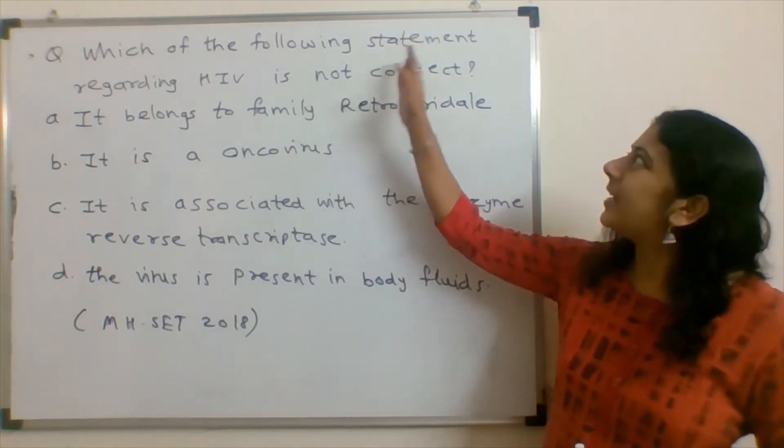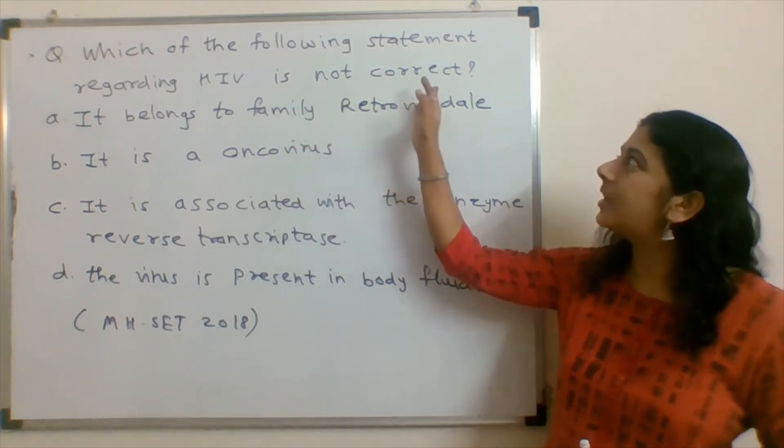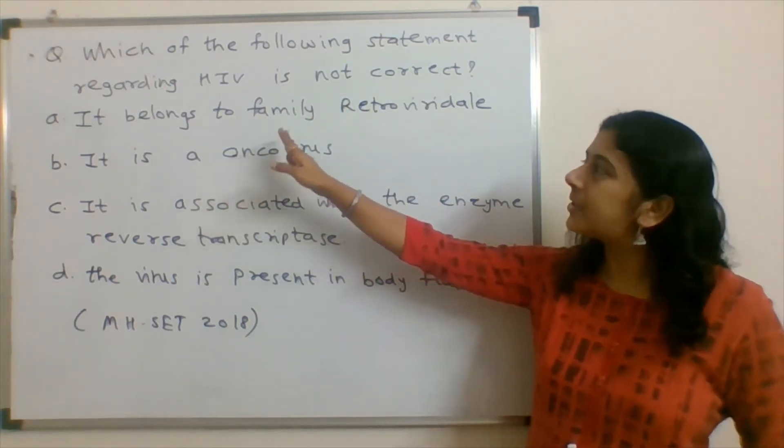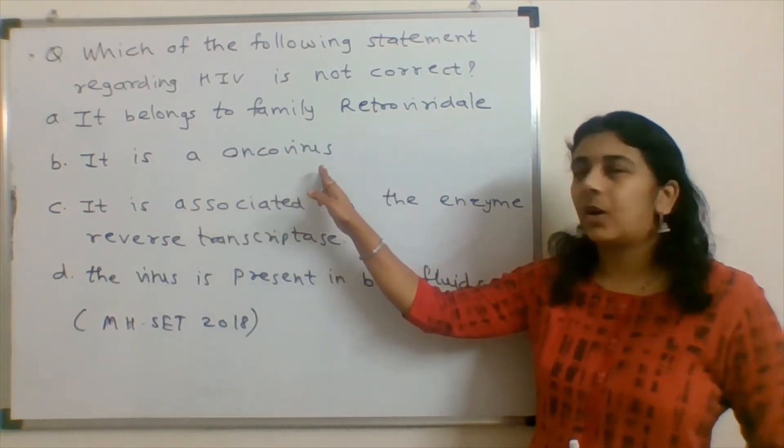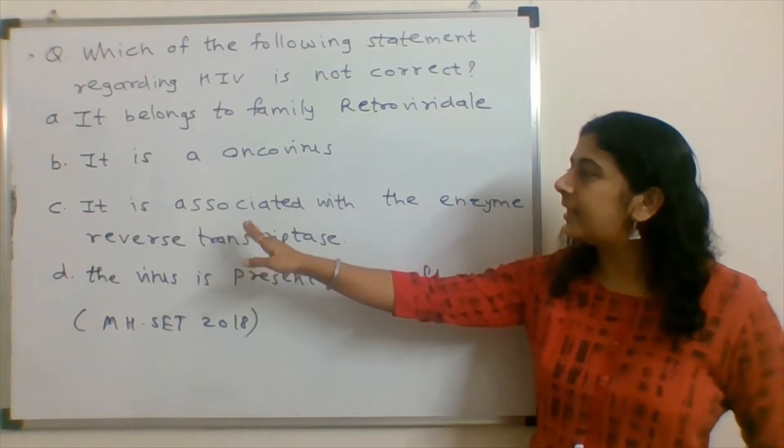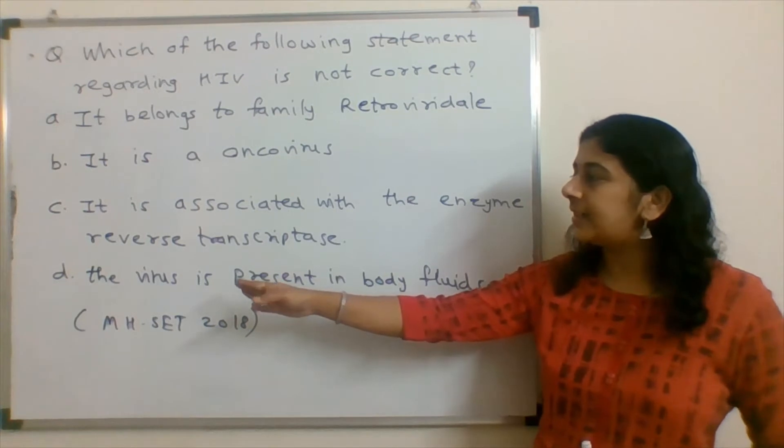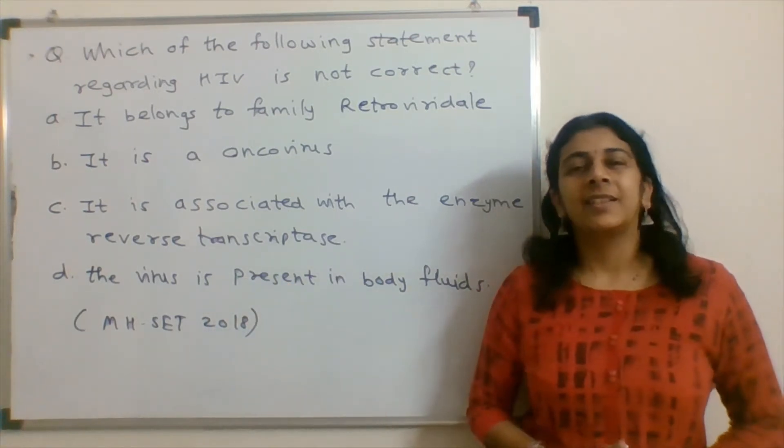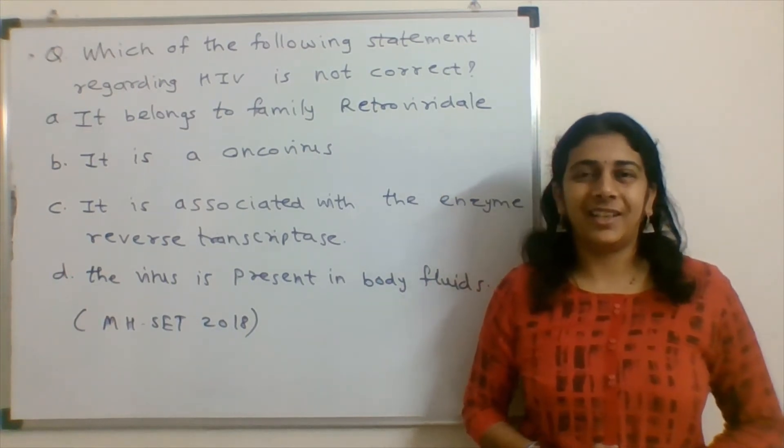Which of the following statement regarding HIV is not correct? Options are: it belongs to family Retroviridae, it is an oncovirus, it is associated with the enzyme reverse transcriptase, and the virus is present in body fluids. The question is from Maharashtra State Examination 2018.